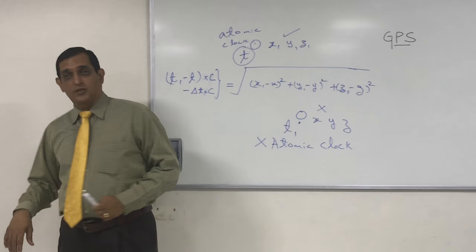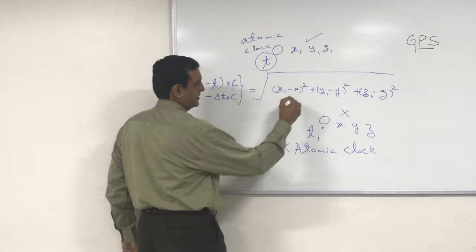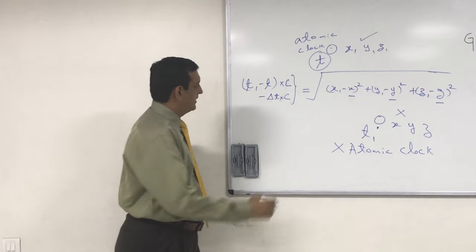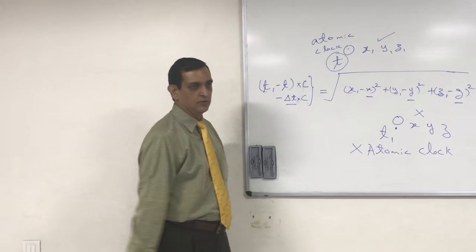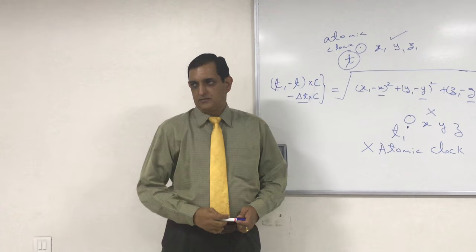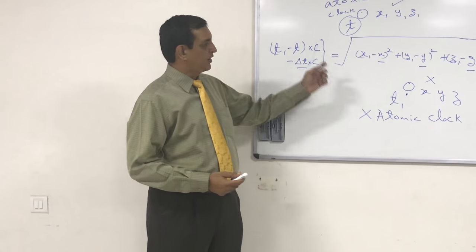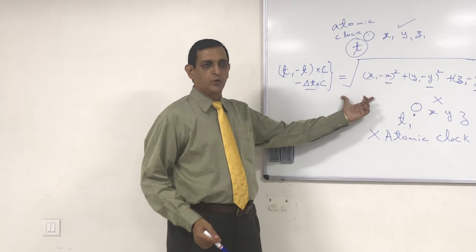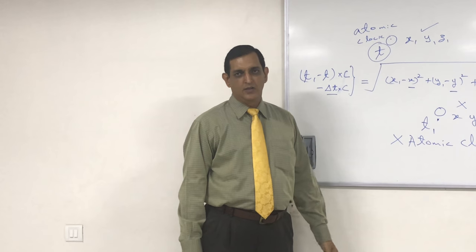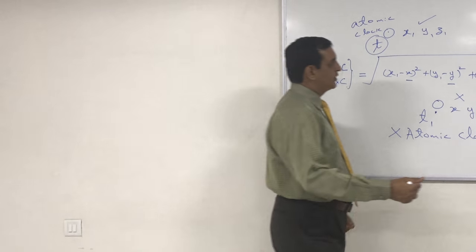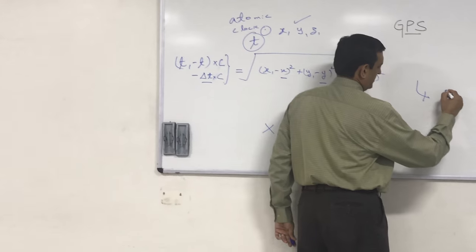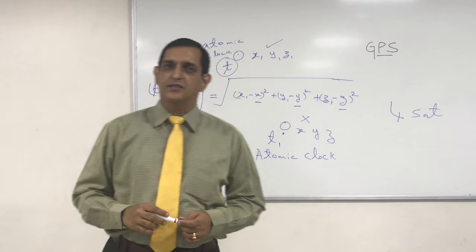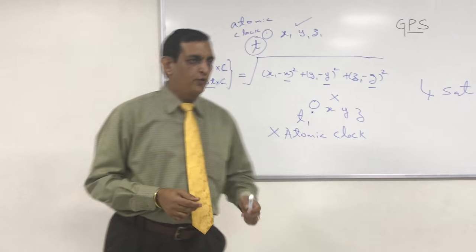How many unknowns are in this equation? X is unknown, Y is unknown, Z is unknown, and delta T is unknown — four unknowns. To solve this equation, we need four equations. So what we need basically is observation from four satellites. If I take observations from four satellites, I will know all four unknowns.